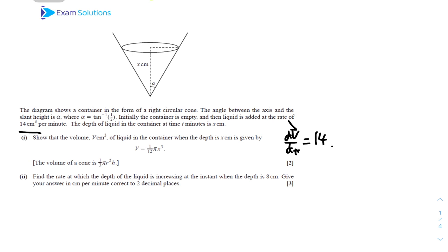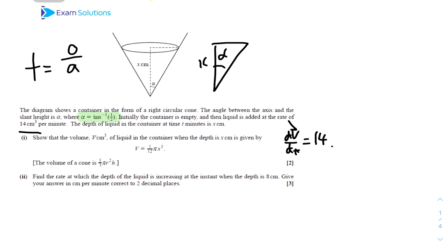We can notice this part first. Drawing the triangle with angle α and depth x cm, we are given α = tan⁻¹(1/2). We know that tan equals opposite over adjacent, so opposite is 1 and adjacent is 2. From here we can deduce that x corresponds to the adjacent side value of 2, and x is the same as the height in the volume of a cone formula. So x = 2, which equals the height.